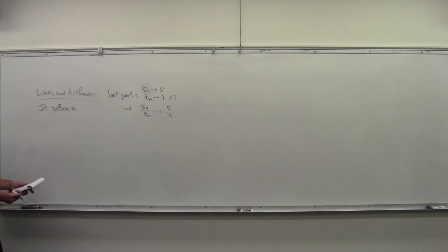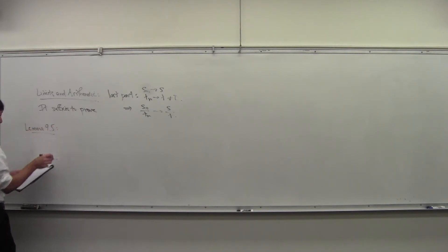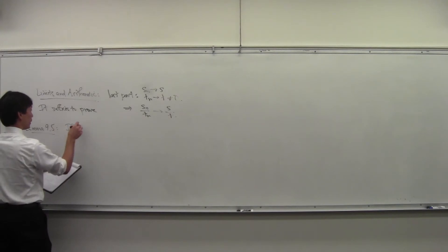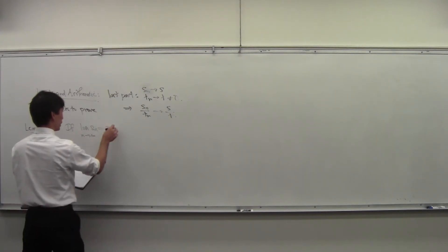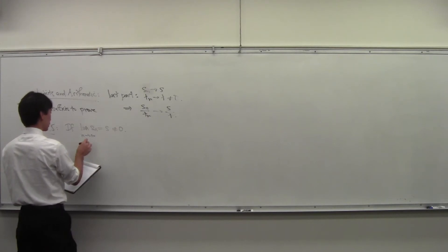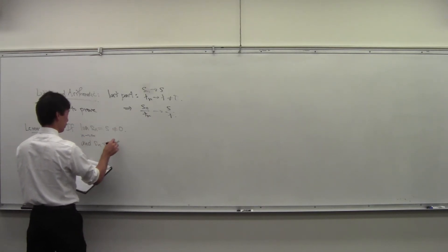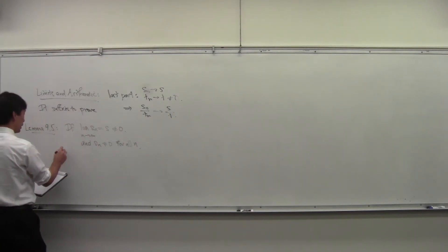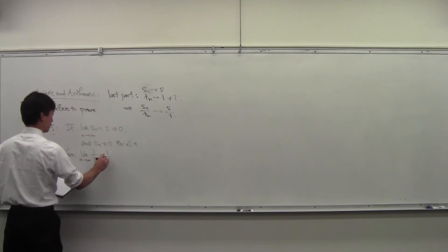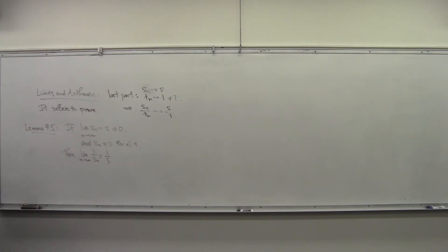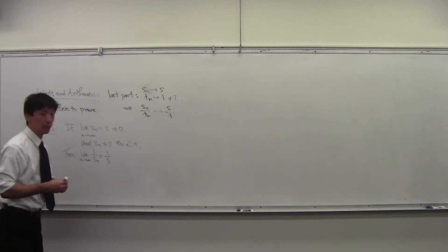It will suffice to prove what's called Lemma 9.5 in your text: that if the limit of s_n is s as n goes to infinity, and s is not zero, and s_n is not zero for all n, then the limit of 1 over s_n, as n goes to infinity, is 1 over s.